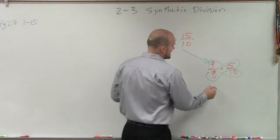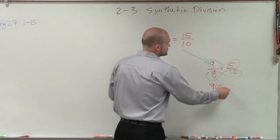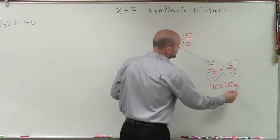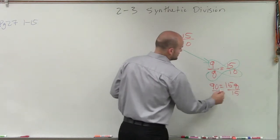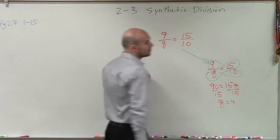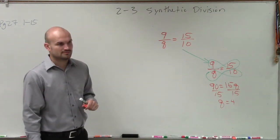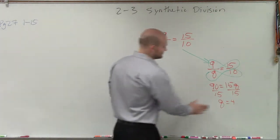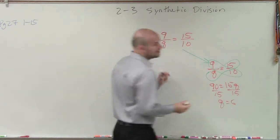So 9 times 10 is 90 equals 15q. Divide by 15, divide by 15, q equals... It's not 400. It's 6. It's 6. All right.